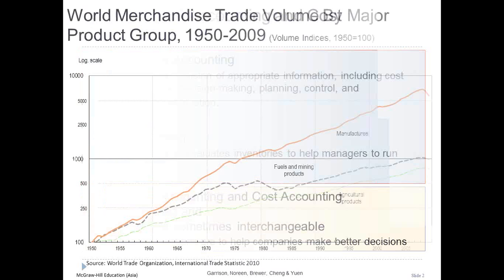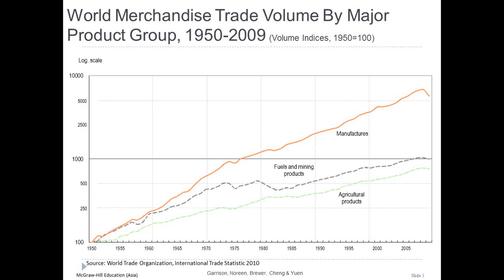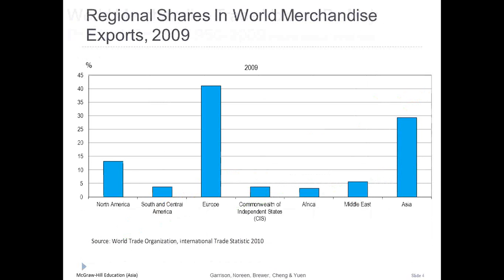Here we see a chart showing the world merchandise trade volume data. It shows an enormous increase in trade throughout the world, especially during the period 1950 to 2009, highlighting the growth of the manufacturing sector. We also see the regional shares in world merchandise exports, which shows that Europe and Asia have the majority shares totaling 70% of the world merchandise exports.